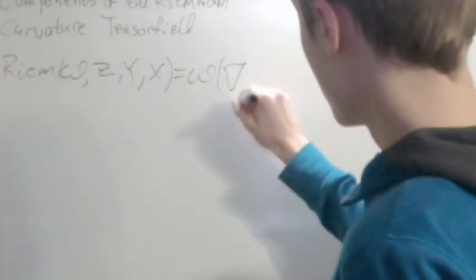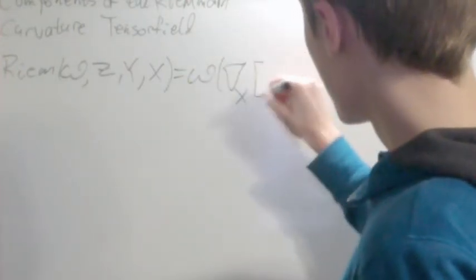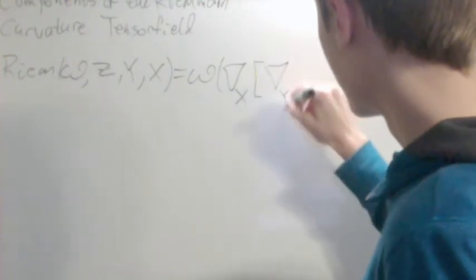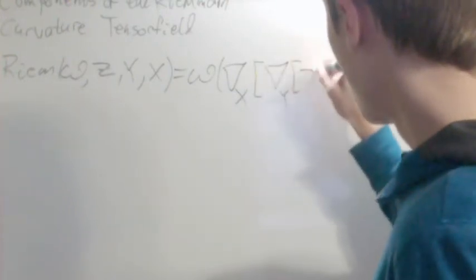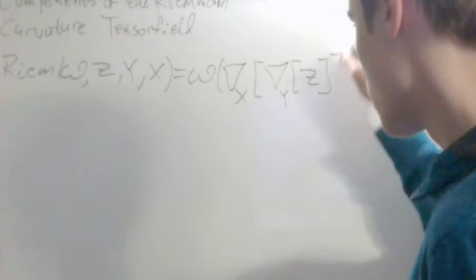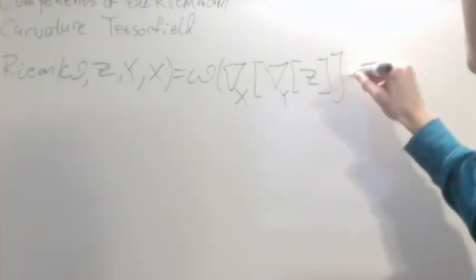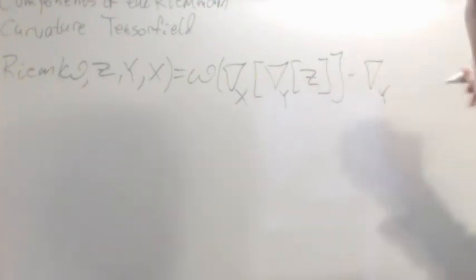So what we do is we say Riemannian curvature of some covector field, and then vector fields Z, Y, X is going to be equal to that covector field applied to the covariant derivative along X of the covariant derivative along Y of Z.